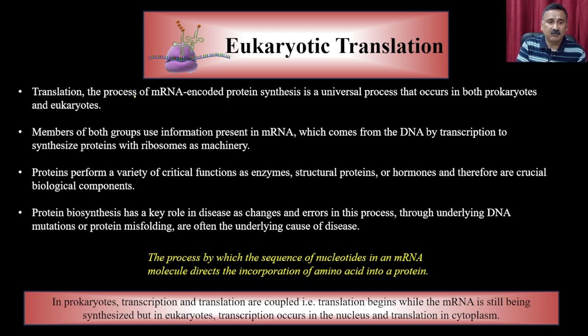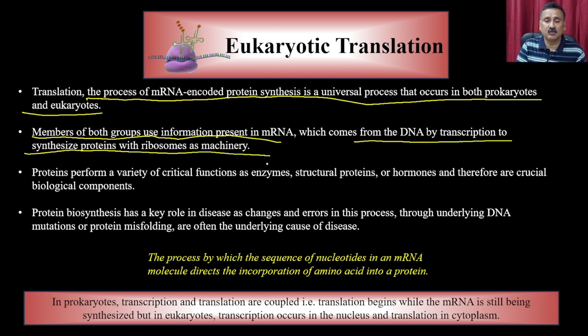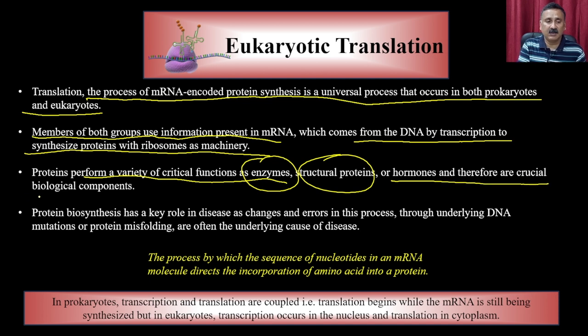Eukaryotic translation is the process of messenger RNA-coded protein synthesis, which is a universal process occurring in both prokaryotes and eukaryotes. Members of both use the information in messenger RNA — which comes from DNA by transcription — to synthesize protein with the ribosome as the machinery. Proteins perform a variety of critical functions such as enzymes, structural proteins, or hormones, and are therefore crucial for biological processes. The central dogma is very important because it explains how these events are connected — when a particular hormone is required, the translational machinery is activated so the ribosome sits on the RNA and produces the proteins.